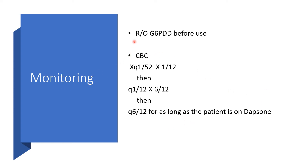Monitoring: we have to rule out G6PD deficiency before use. When the patient is already on Dapsone, check the complete blood count every week for the first one month, then every month for the first six months, and finally every six months for as long as the patient remains on Dapsone.